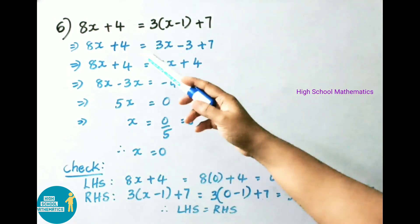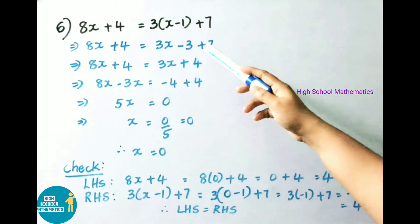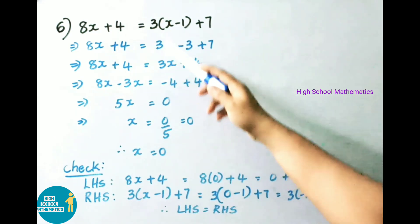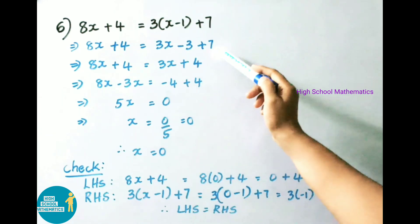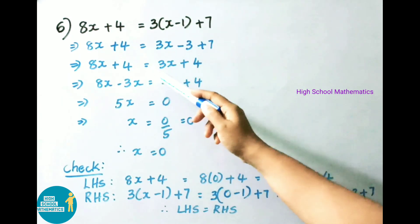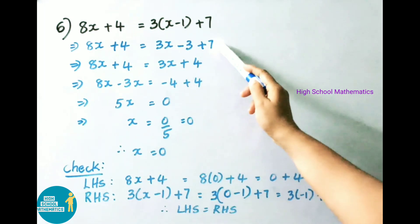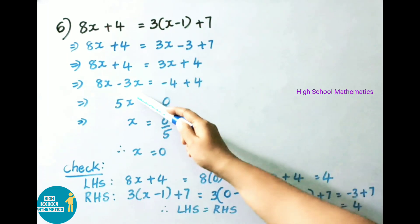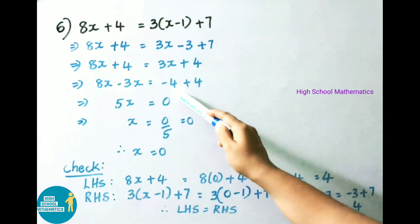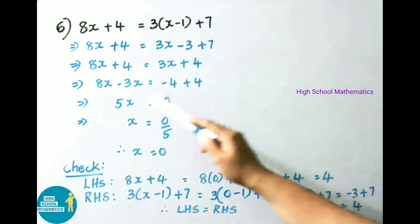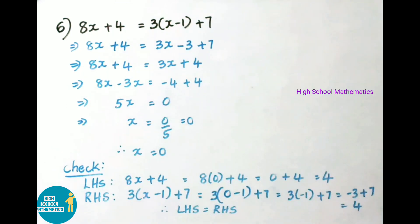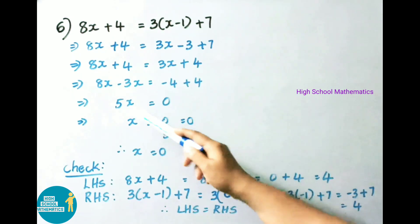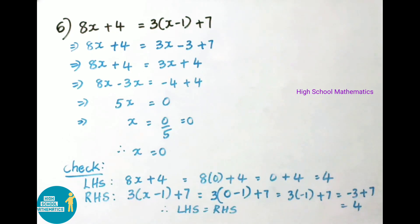Question 6: 8X + 4 = 3(X − 1) + 7. Expanding: 8X + 4 = 3X − 3 + 7 = 3X + 4. Transposing 3X: 8X − 3X = 5X, and 4 − 4 = 0. So 5X = 0, therefore X = 0.